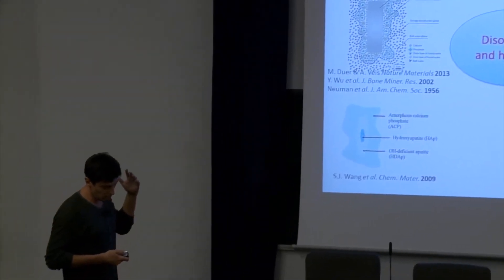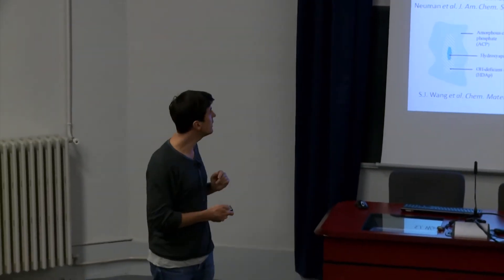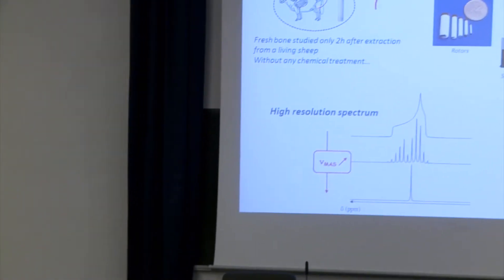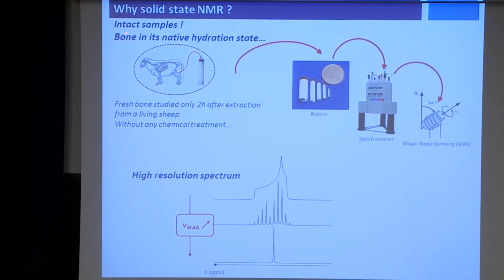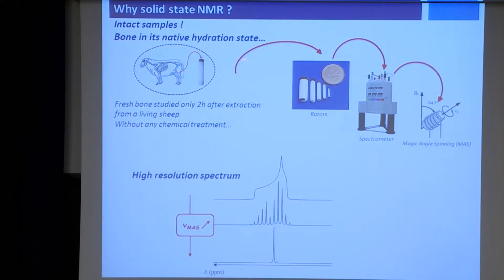We decided to reinvestigate the surface domain of the bone mineral using one particular technique: solid-state nuclear magnetic resonance. Why use that technique? Maybe the first reason is because we can deal with intact samples. In the case of bone, for instance, we use samples directly extracted from a living animal and study the sample just two hours maximum after extraction. It means we can handle bone in its native hydration state, without any chemical treatment, so we do not alter the surface or alter the mineral. We put the sample in the sample holder — the rotors — put in the spectrometer, and spin at the magic angle in order to get high-resolution spectra.